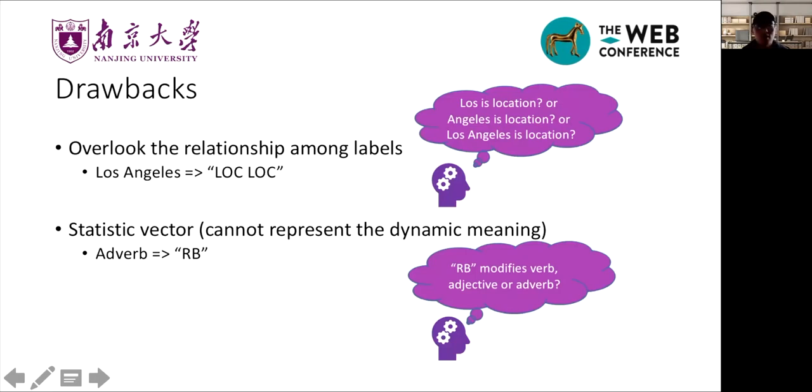Firstly, this lookup embedding method overlooks the relationship among labels. For example, the NER labels of Los Angeles is LOC-LOC. LOC is short for location. Lookup embedding transforms each LOC label into the same vector separately. It can describe that Los or Angeles are special entities. However, it cannot represent Los Angeles as a whole location. And this is actually what we want the model to know.